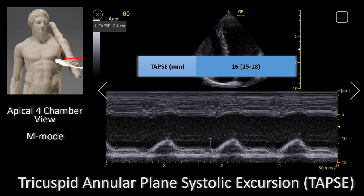This table summarizes the normal TAPSI values. Anything less than 16 millimeters is abnormal, and anything 16 or more is normal. The numbers in parentheses are the 95% confidence intervals. In this particular patient we measured the TAPSI to be 2.4 centimeters or 24 millimeters, which is more than 16, so that is a normal TAPSI.